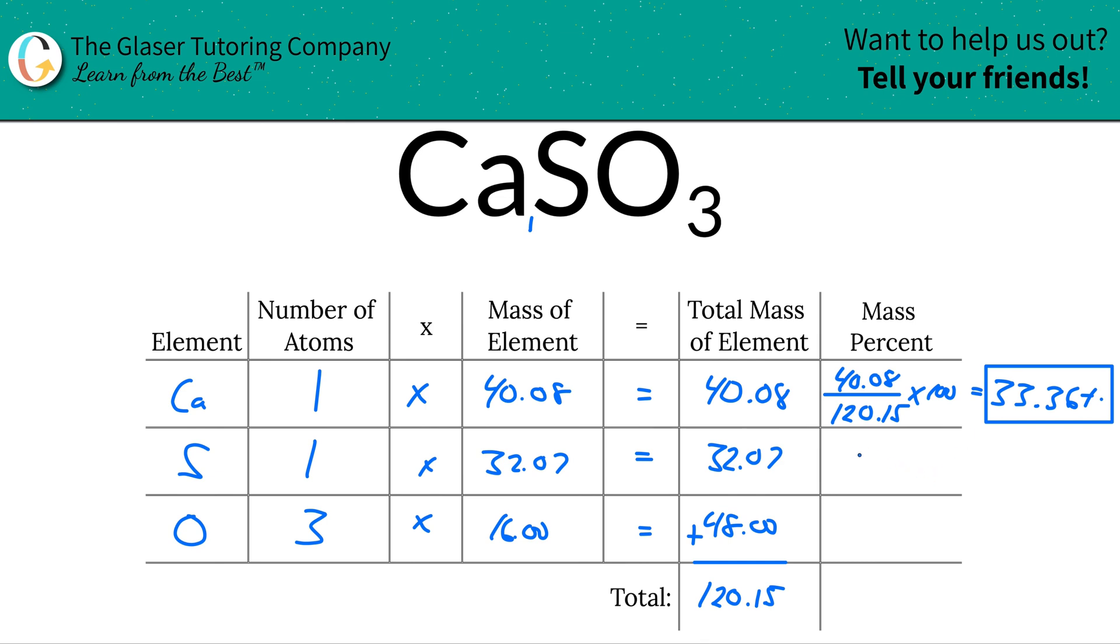So how about for sulfur? We're simply going to take the total mass of that sulfur, which was 32.07, divided by the total mass of the entire compound, which was 120.15. Simply multiply that by 100, and the percent of sulfur here will be 26.69%. So that is the percent for sulfur.